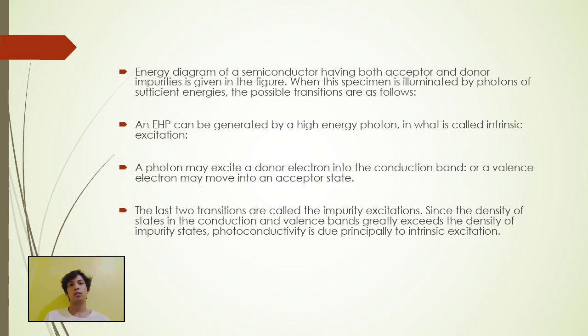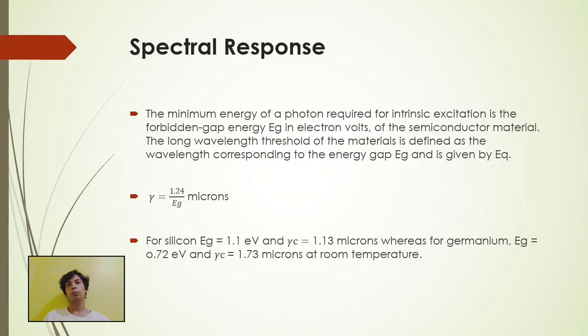Spectral response. The minimum energy of photon required for intrinsic excitation is the forbidden gap energy, Eg, in electron volts. Of the semiconductor materials, the long wavelength threshold of the materials is defined as the wavelength corresponding to the energy gap, Eg, and is given by the equation. Gamma is equal to 1.24 over Eg microns.